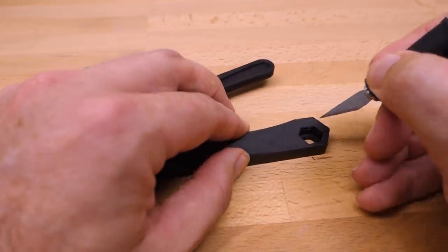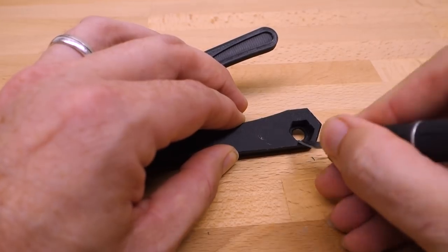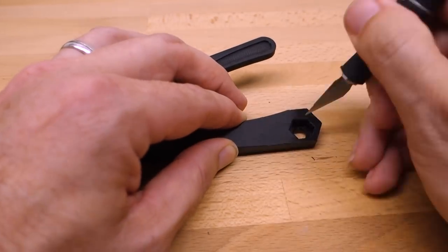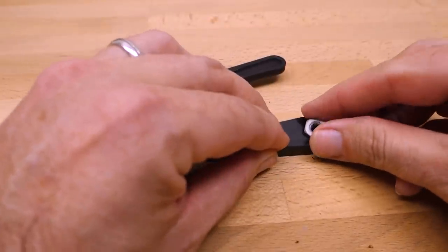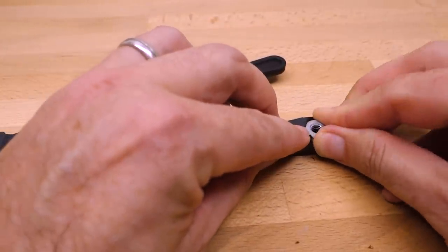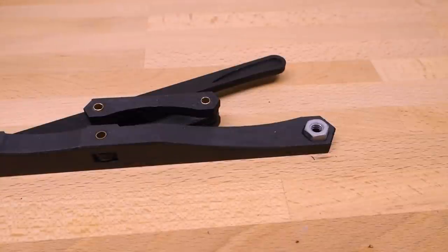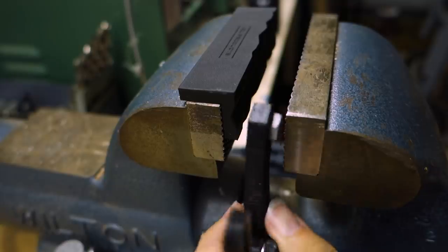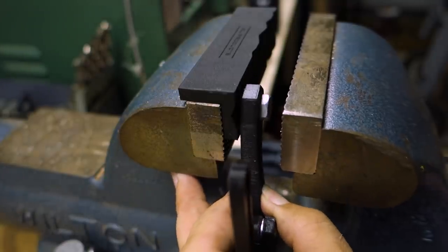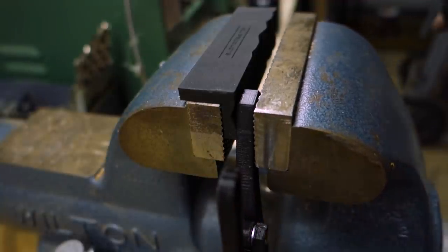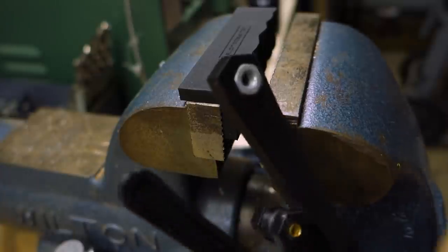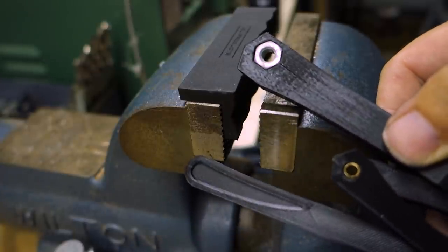To mount the quarter-twenty nut, let's first deburr the hole with an exacto knife. You can tap the nut in, but squeezing it with the vise reduces the chances of splitting. Try and get it to go in square.